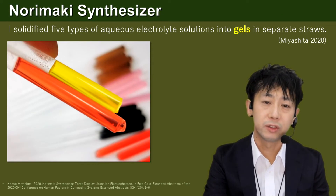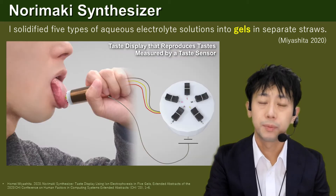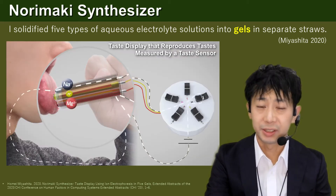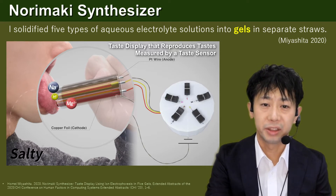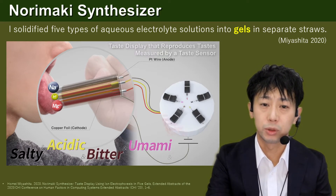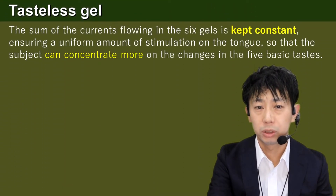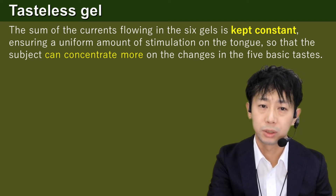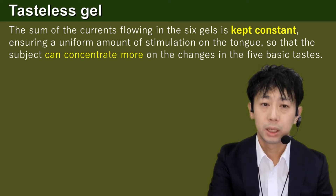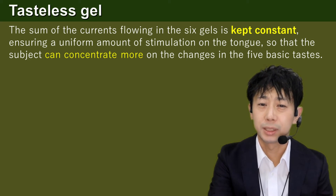I solidified five types of aqueous electrolyte solutions into gels in separate straws. Upon application of electricity, ion migration was observed similar to that in the aqueous solutions, and the taste was inhibited in proportion to the intensity of the current. During the experiment with the prototype, any increase in the applied current was perceived by the tongue as a type of stimulation, and this was an issue. In my approach, a stronger current is used to express a weaker taste, so it can lead to perceptual confusion.